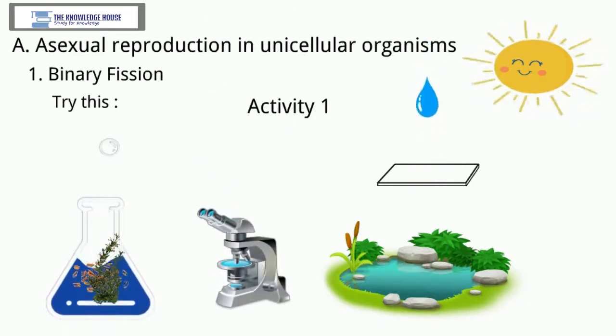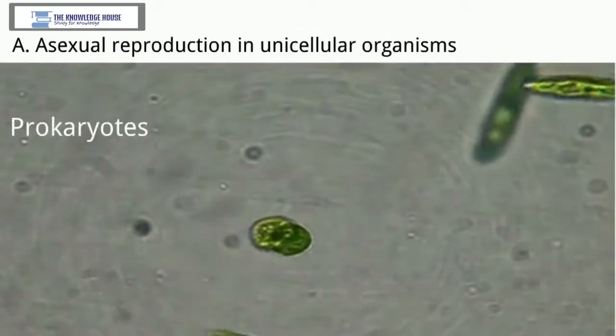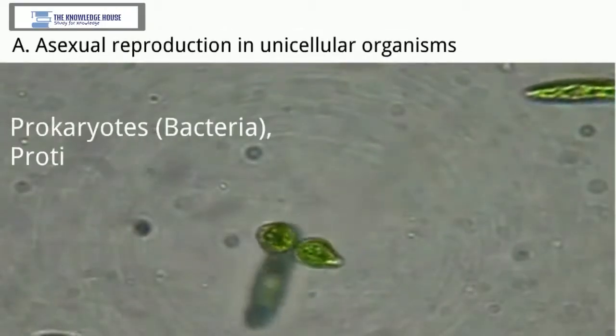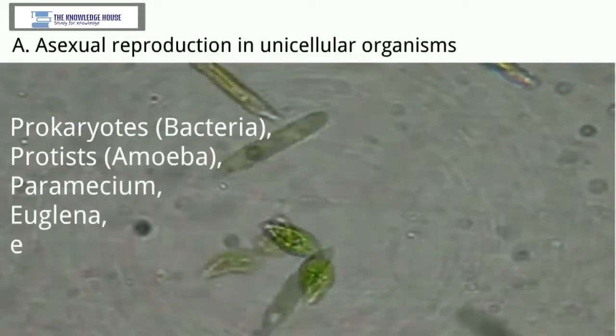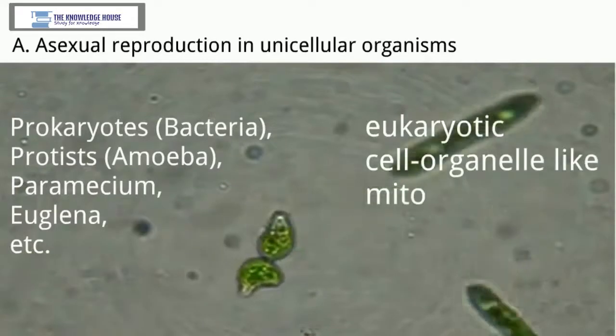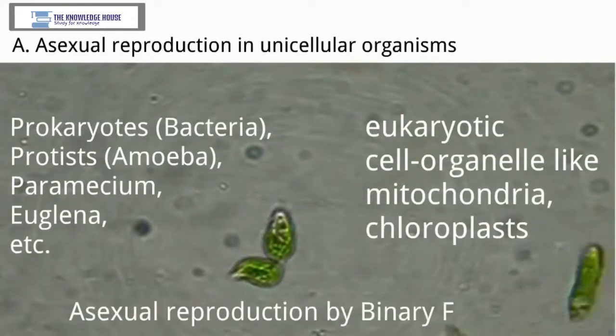You will be able to see many paramecia performing binary fission. Prokaryotes, bacteria, protists, amoeba, paramecium, euglena, and eukaryotic cell organelles like mitochondria and chloroplasts perform asexual reproduction by binary fission.